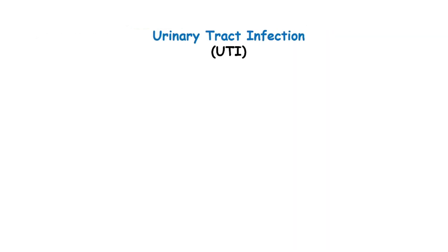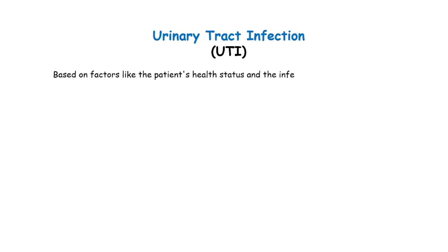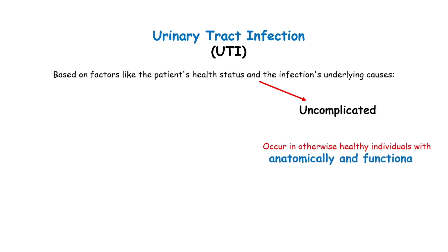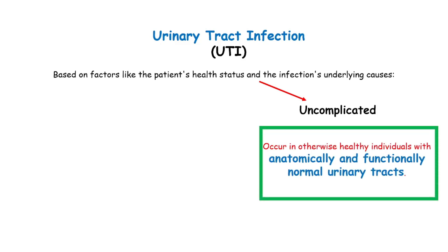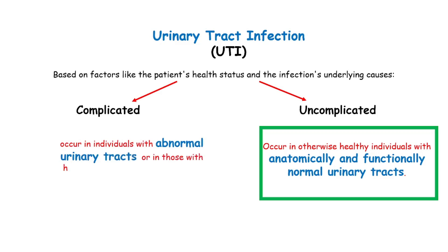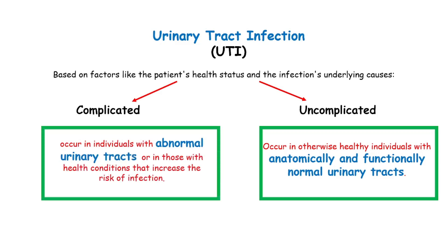A urinary tract infection, or UTI, can be classified as either complicated or uncomplicated based on factors like the patient's health status and the infection's underlying causes. Uncomplicated UTIs occur in otherwise healthy individuals with anatomically and functionally normal urinary tracts. Complicated UTIs occur in individuals with abnormal urinary tracts or in those with health conditions that increase the risk of infection.